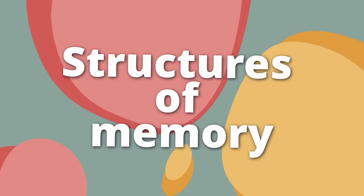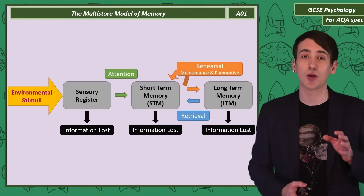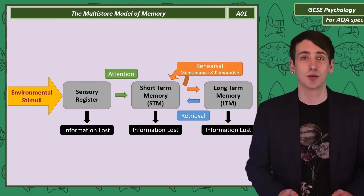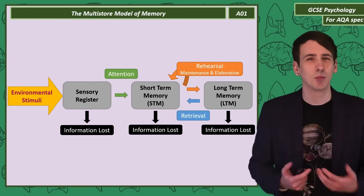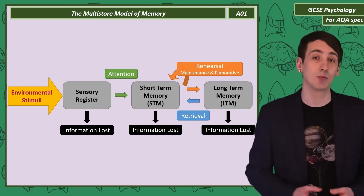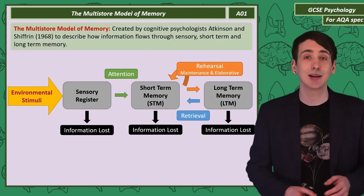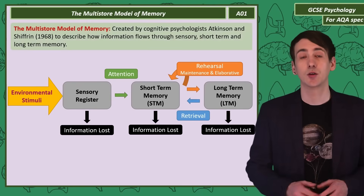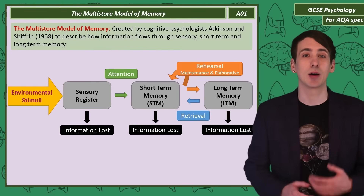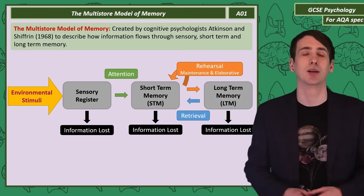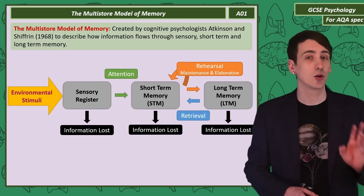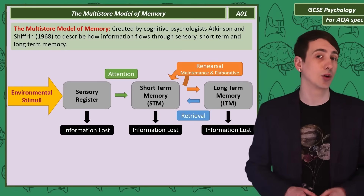Structures of memory. This diagram is called the multi-store model — you're going to want to remember this diagram inside and out. It was created back in 1968 by Atkinson and Shiffrin, two cognitive psychologists. They used this model to describe how information is processed in your mind. They identified three memory stores: sensory memory, short-term memory and long-term memory.